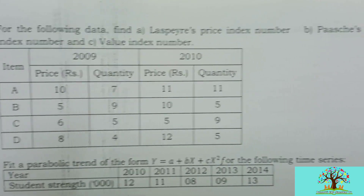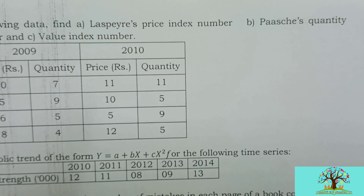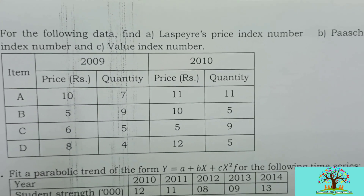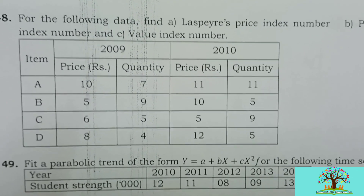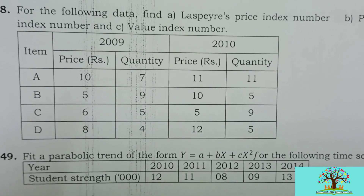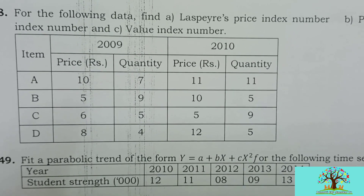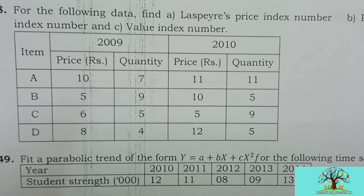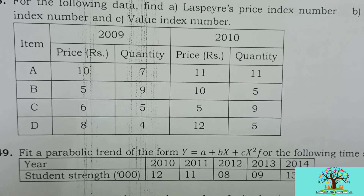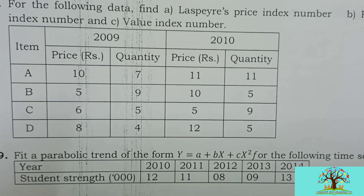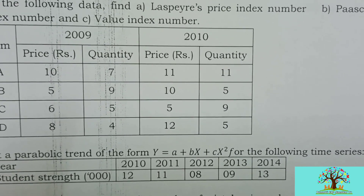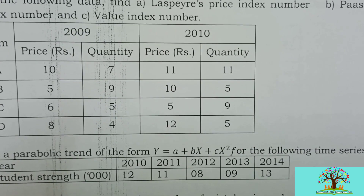For the following data, find Laspeyre's price index number, Paasche's quantity index number, and value index number. The data given is a table with commodities A, B, C, D, showing 2009 price and quantity and 2010 price and quantity. 2009 is the base year, so base year price is p-naught and base year quantity is q-naught. 2010 is the current year, so current year price is p1 and current year quantity is q1.